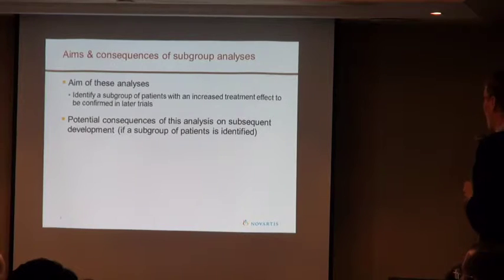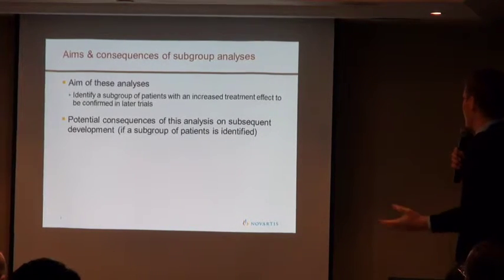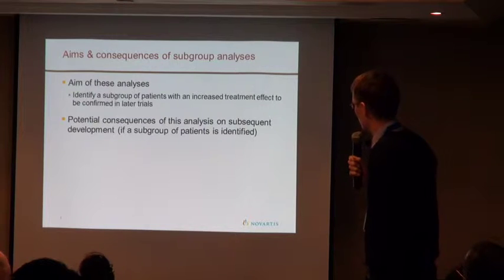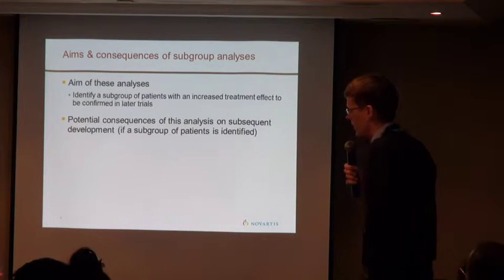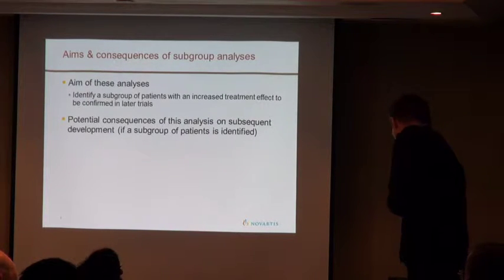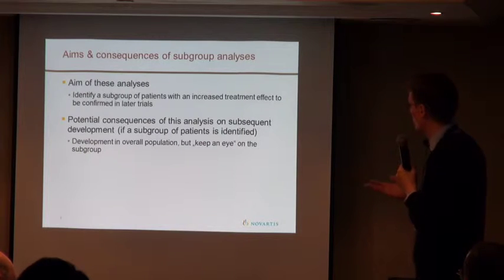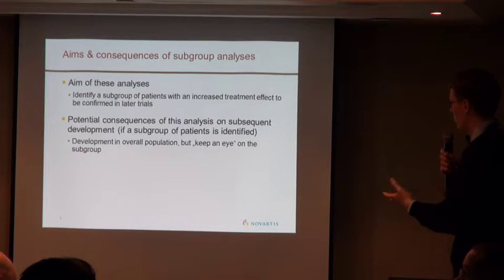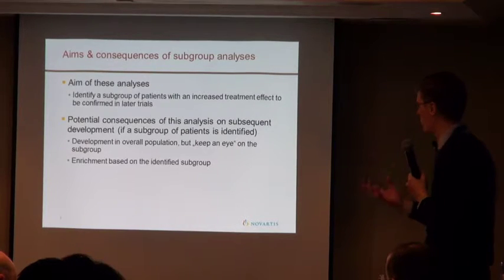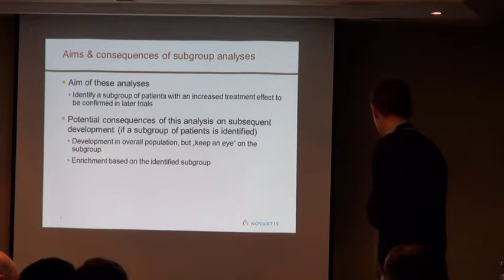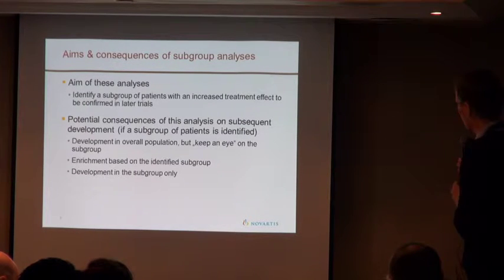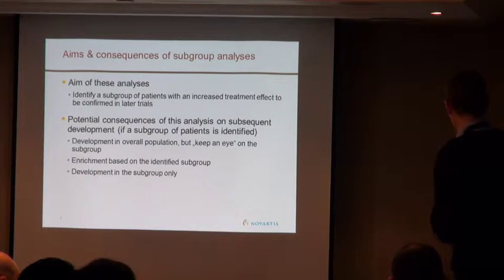The aim of these analyses is to identify a group that might respond better — a more sensitive population, super-responders, or however you might call it — a subgroup with increased treatment effect that you would then confirm in later trials. The consequences, if you found something, might be: continuing development in the overall population while keeping an eye on the subgroup; enriching the population if you're more confident; or development in the subgroup only. The approach taken also depends on many other circumstances.